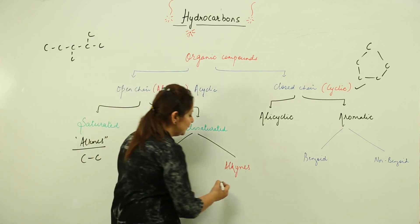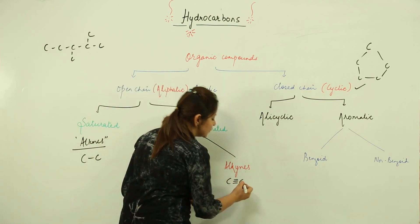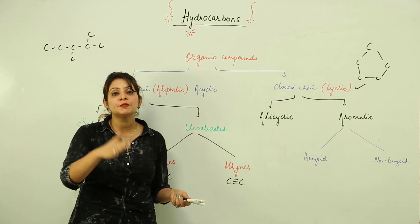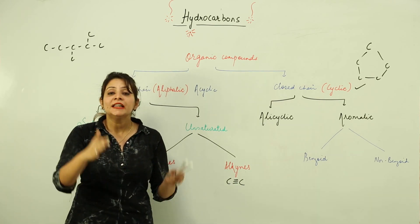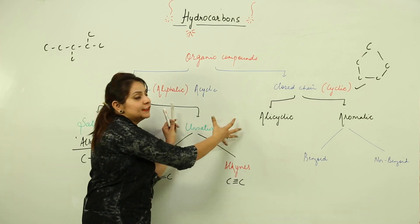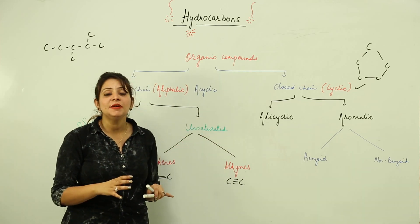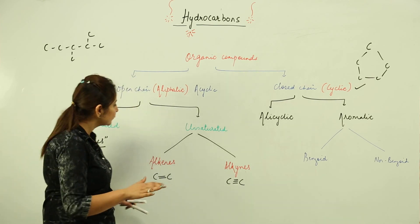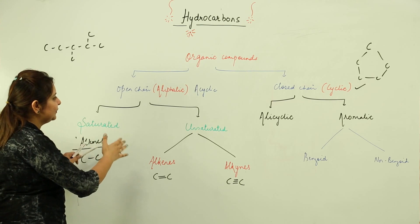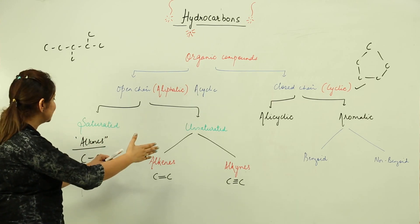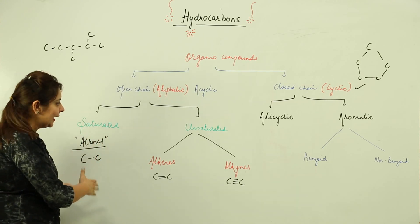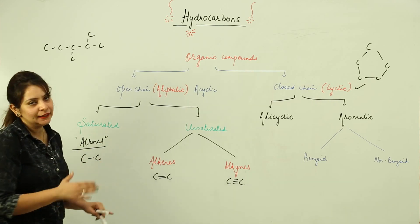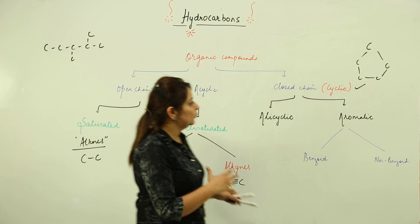Saturated compounds are called alkanes, in which only single bonding is present throughout the chain. Unsaturated compounds are divided into two categories: alkenes and alkynes. In alkenes, at least one double bond is present in the chain, and in alkynes, at least one triple bond is present. We may also encounter a molecule in which both double and triple bonds are present, which falls in the category of the unsaturated system.